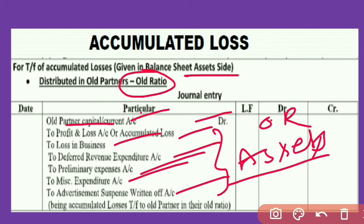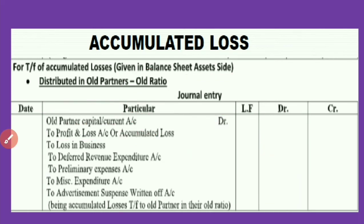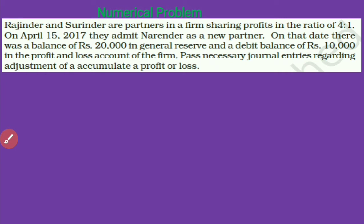All these items will be debited in partners' capital or current account in their old ratio at the time of admission of a new partner. It is distributed or debited in old partners' capital or current account only, because these are the losses and expenses incurred in the business before the admission of the new partner. That's why it is debited only in the old partners' capital or current account. Now let's see one question on this topic.